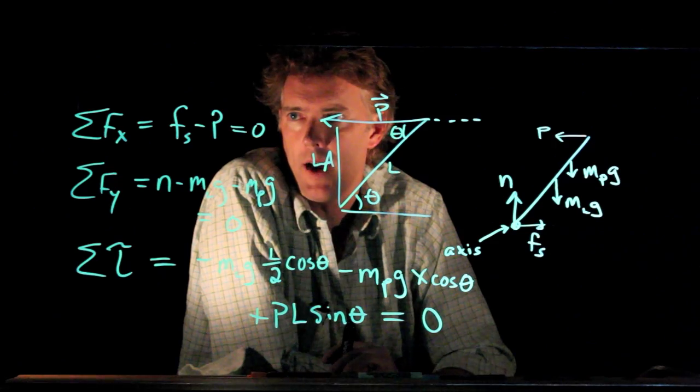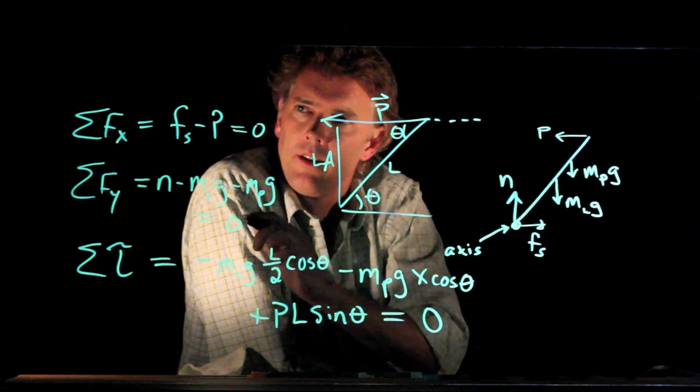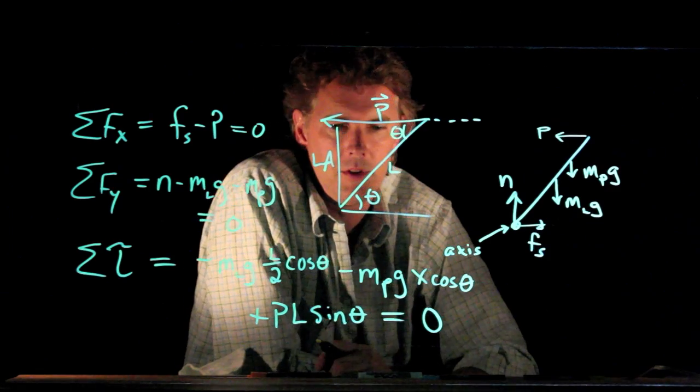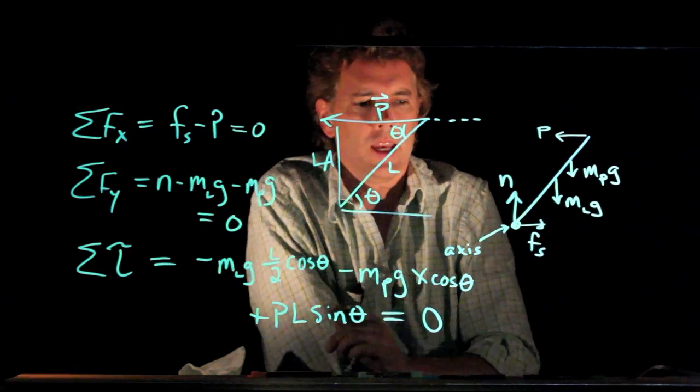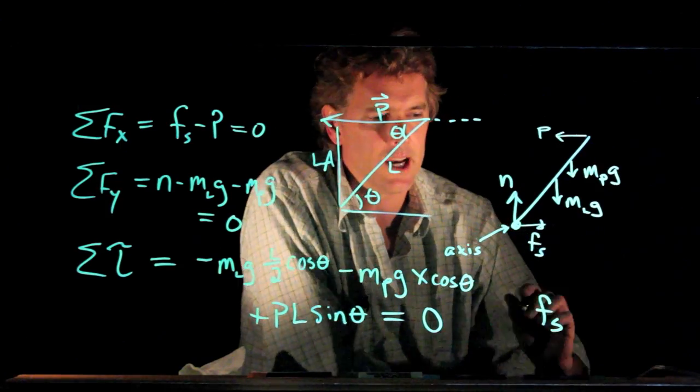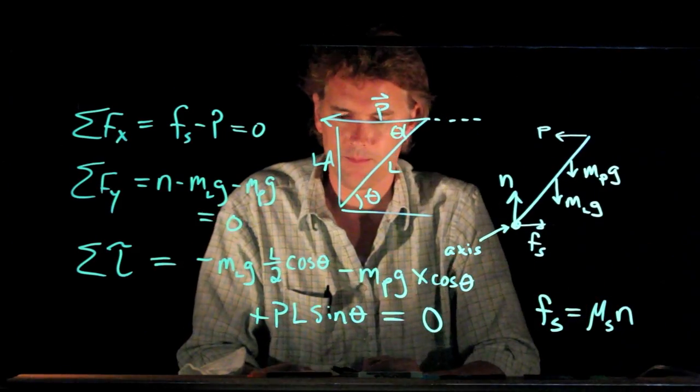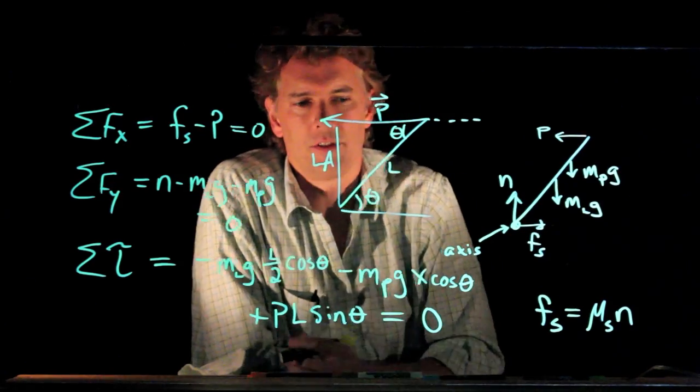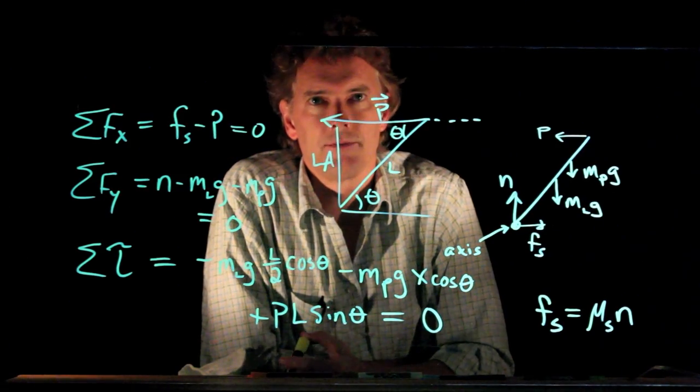And now look, you have three equations and you have a number of unknowns. There is in fact F s which is unknown, p which is unknown, n is unknown, and x which is unknown. And so we need in fact one more equation to make this work. And it is of course the static friction equation. What's the biggest that static friction can be? It's F sub s equals mu s times n. And now with those four equations, you can in fact solve for x, how far up the ladder can you go? Alright. Good luck with that one. If you're having a lot of trouble, come see me in my office. Cheers.